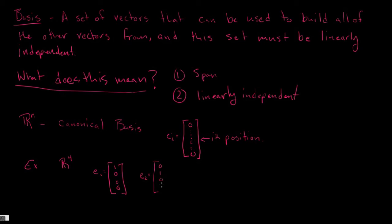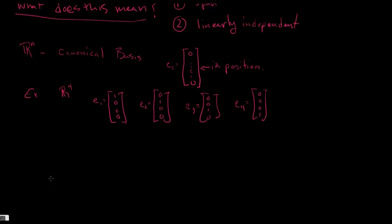E2 is going to be zero, one, zero, zero. E3 is going to be zero, zero, one, zero. And then finally, our last one is going to be E4. And this one, you already guessed it, it's going to be zero, zero, zero, one. All right. So this is our canonical basis for R^4.